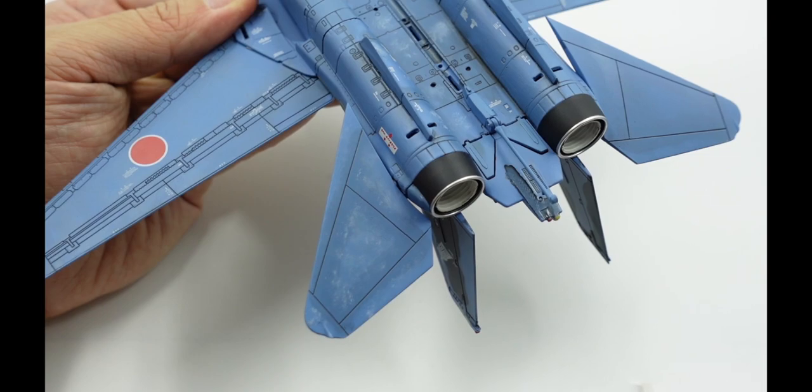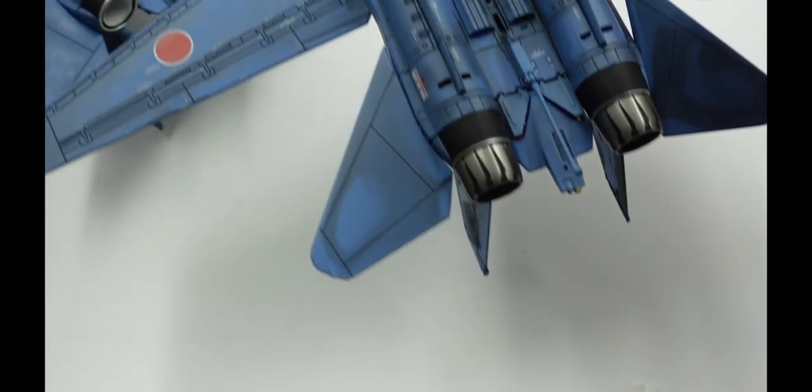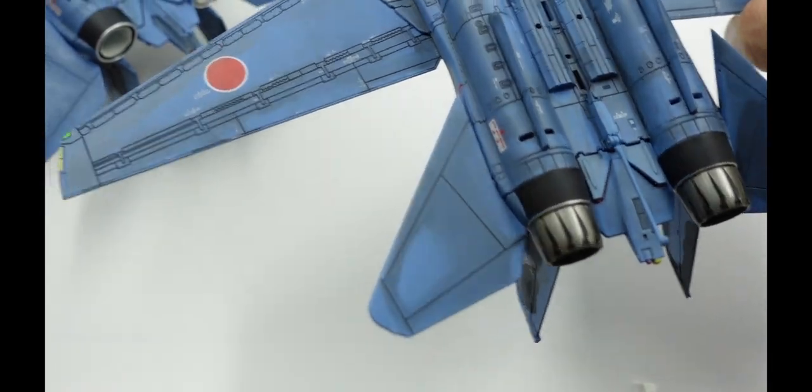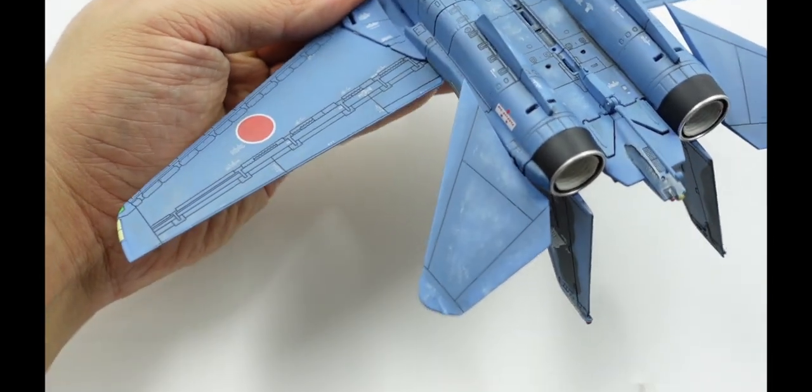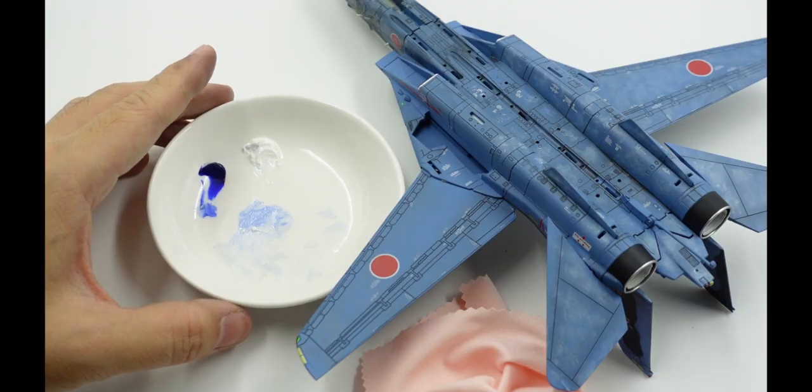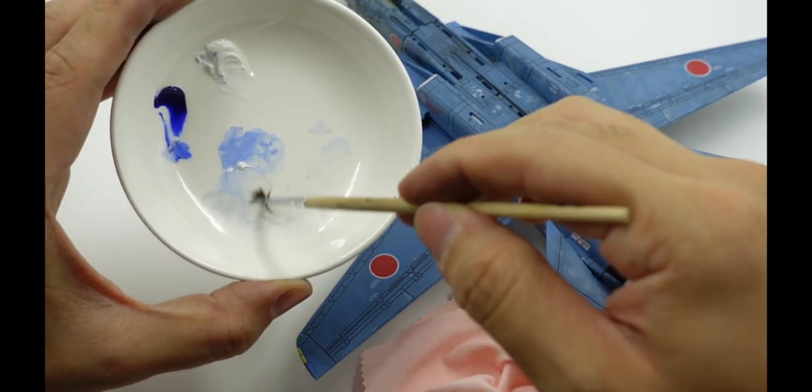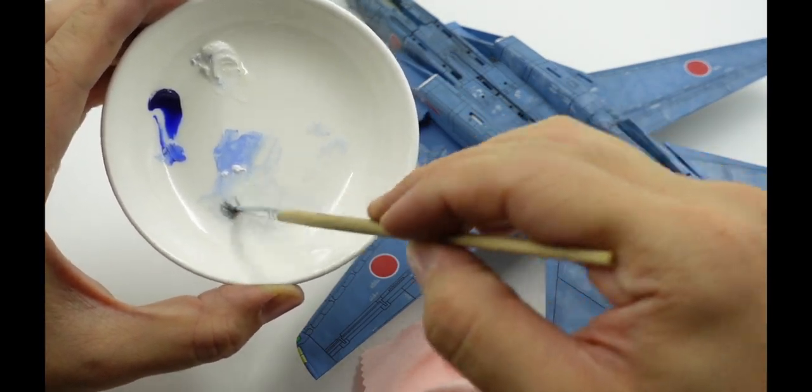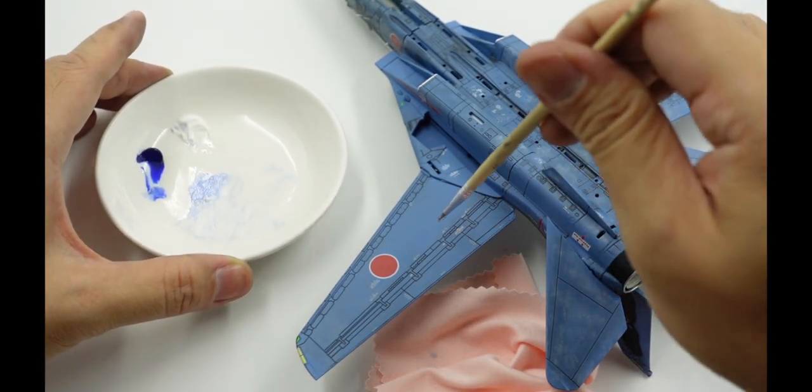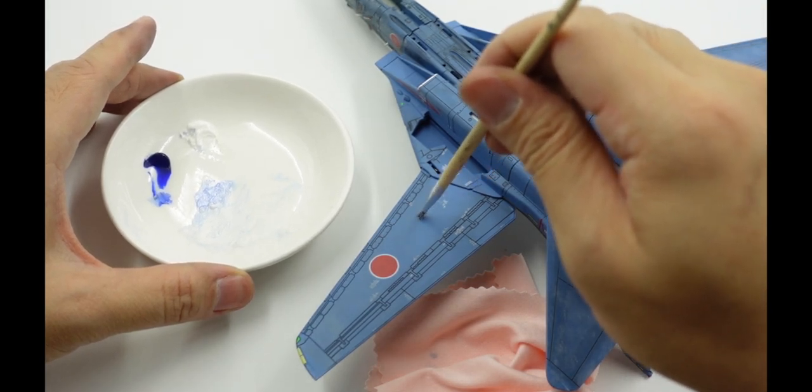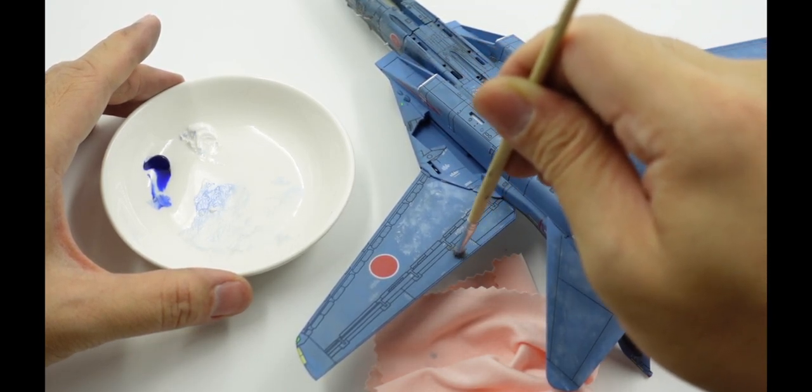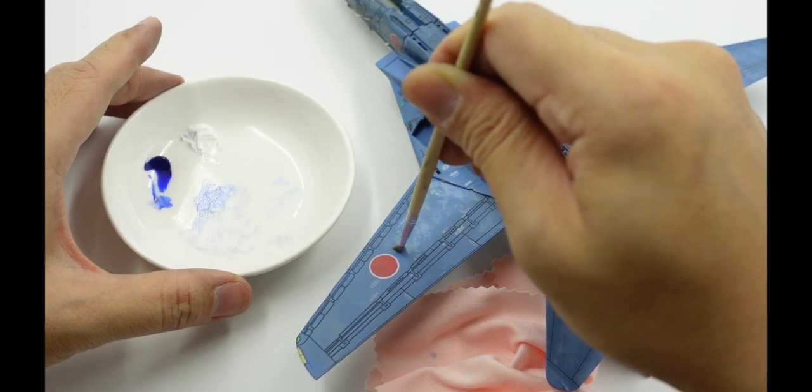Again, we have a comparison between the model that has only the wash and the model that has the highlights applied. The difference is clear. We carry on applying the highlights of spotting onto the wing. The cloth is there to help us remove excess oils. We do not want too much oil in this step. We want the oil to be as light as possible.